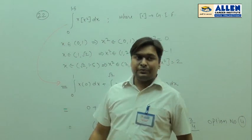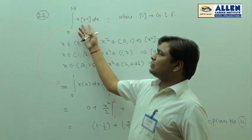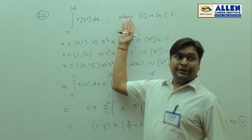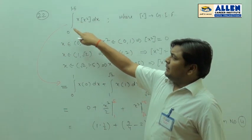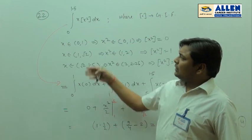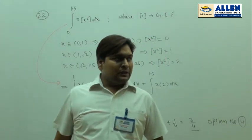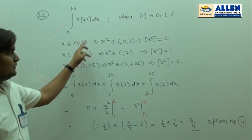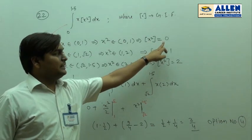Let us discuss question number 22. In this question, we have to find the integration of x·⌊x²⌋ from 0 to 1.5, where ⌊x⌋ denotes the greatest integer function. Because the values of x are from 0 to 1.5, the value of ⌊x²⌋ will be different in different intervals. When x belongs to [0, 1], then x² belongs to [0, 1] and its greatest integer value is 0.